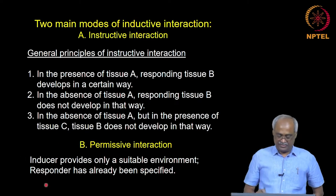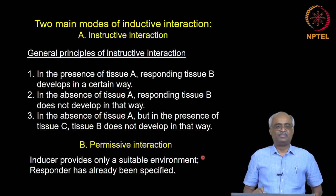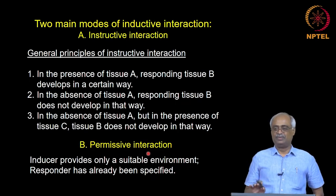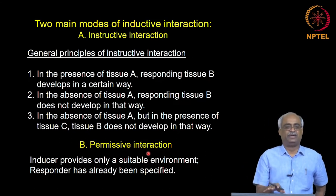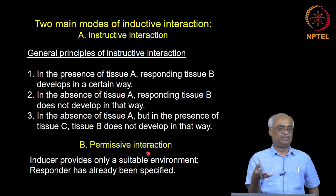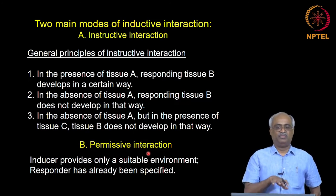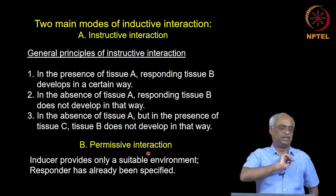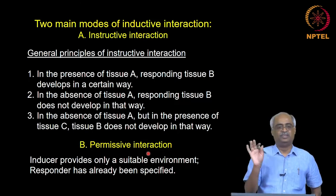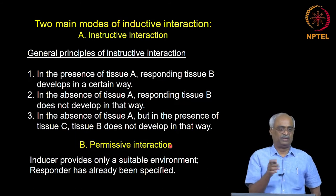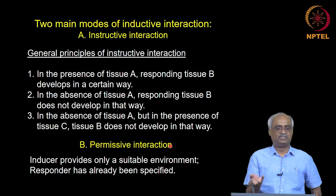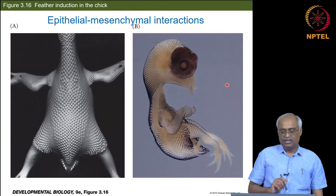The other type is permissive interaction: some cells know exactly what they want to do — they just have to be in a nice environment. For example, they need a substratum on which to anchor themselves; if fibronectin or ECM is present, the cell will develop on its own without induction. A good example is tissue culture plates where adherent cells need adhesion; otherwise they do not grow normally. These are called permissive interactions.